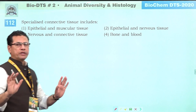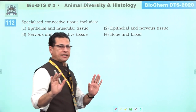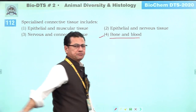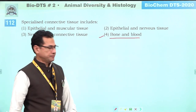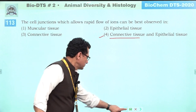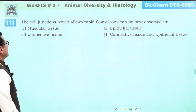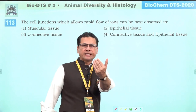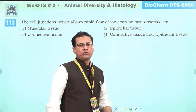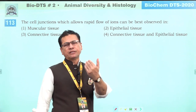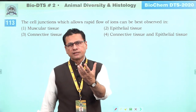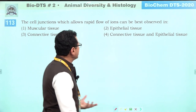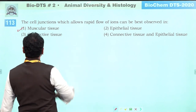Specialized connective tissue includes both blood and bone — as stated in NCRT. The cell junction that allows rapid flow of ions is gap junction, which is present mostly in muscles and cardiac muscles. Answer: muscular tissue, one.